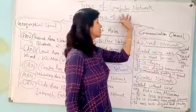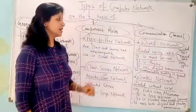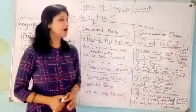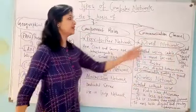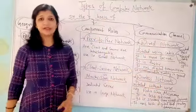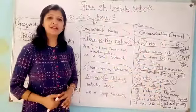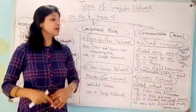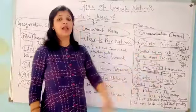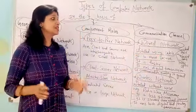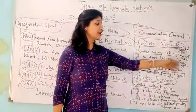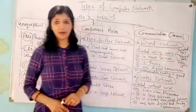The next category of computer network is on the basis of communication channel. On the basis of communication channel, computer network can be wired or wireless. Wired networks are those networks which are installed using wire or cable. The cables used in wired networks are twisted-pair, coaxial cable, or fiber-optic cable.